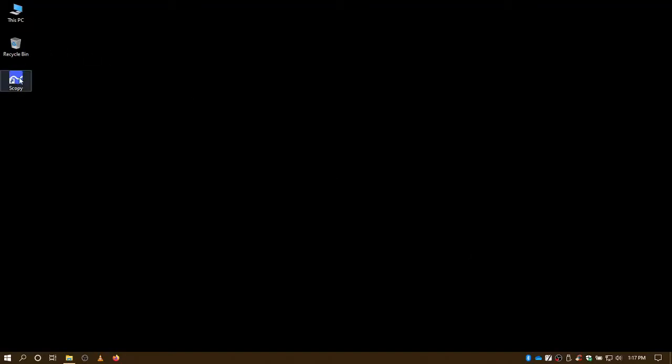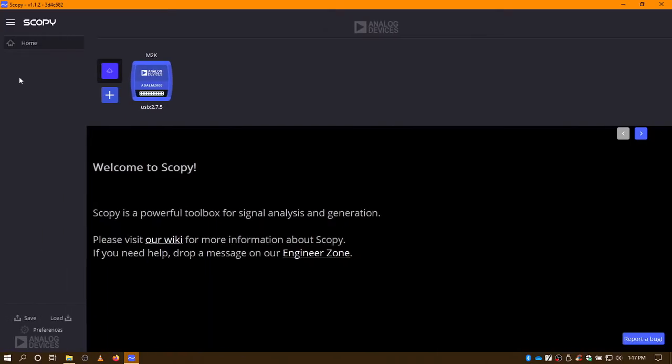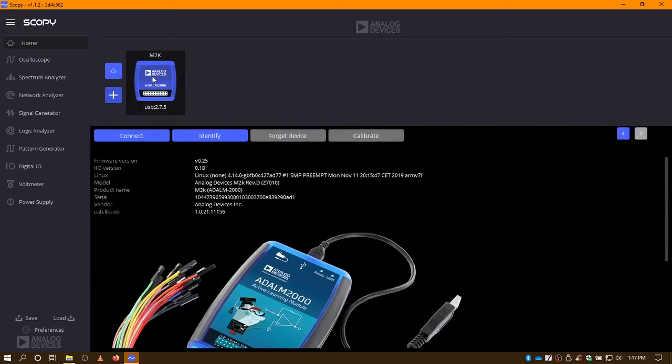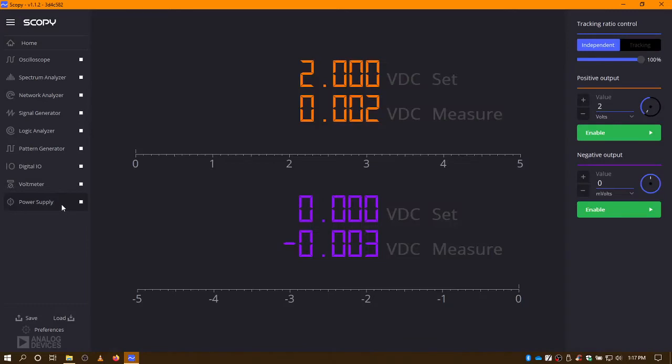Let's fire up the Scopey software. We see our M2K device. So, I select it and I hit connect. The system will connect through the USB port and go through a calibration procedure. And probably in less than a minute, everything will be calibrated. So, the first thing I want to do is look at the power supply.